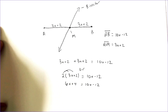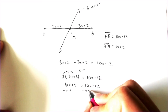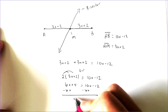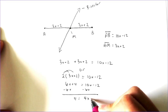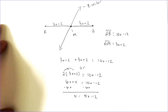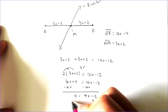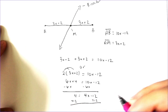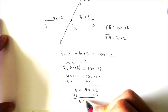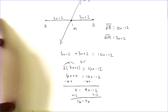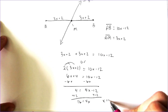From here, I am going to subtract the 6x. We get 4 is equal to 4x minus 12. When we add 12, we end up with 16 is equal to 4x. When we divide by 4, x will equal 4.